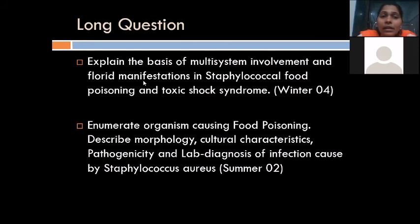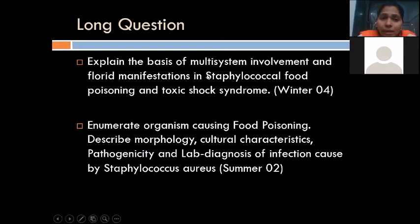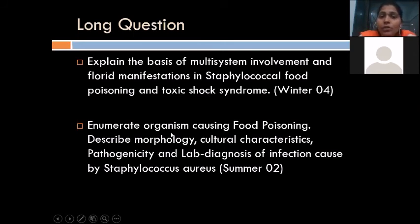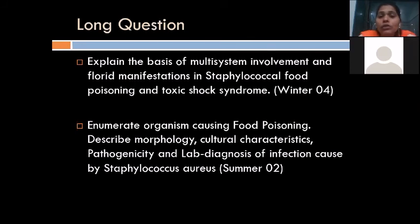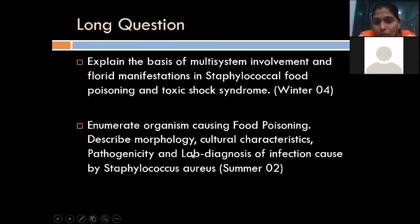In long questions: explain the basis of multisystem involvement and florid manifestation of staphylococcal food poisoning and toxic shock syndrome — asked in Winter 2004. Also: enumerate organisms causing food poisoning, worth two marks. And: describe morphology, cultural characters, pathogenicity, and lab diagnosis of infections caused by Staphylococcus — worth four marks.